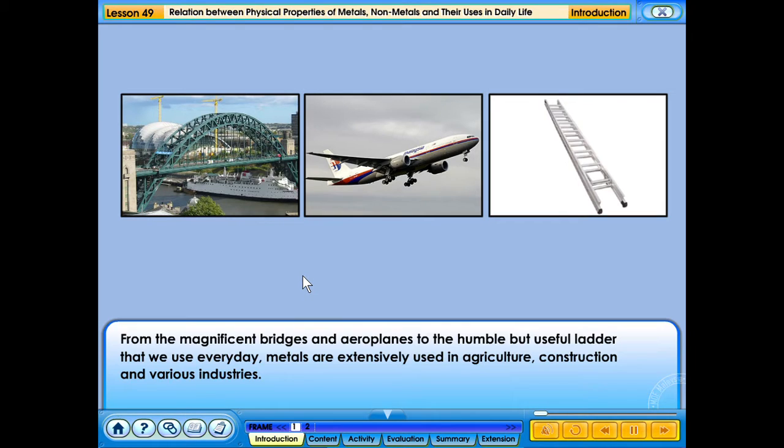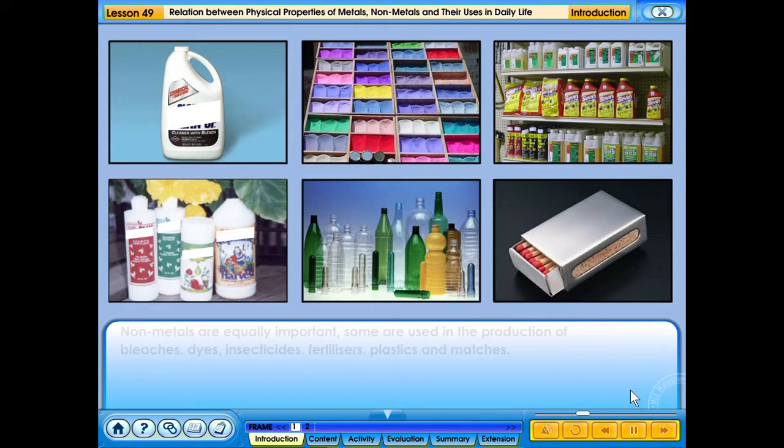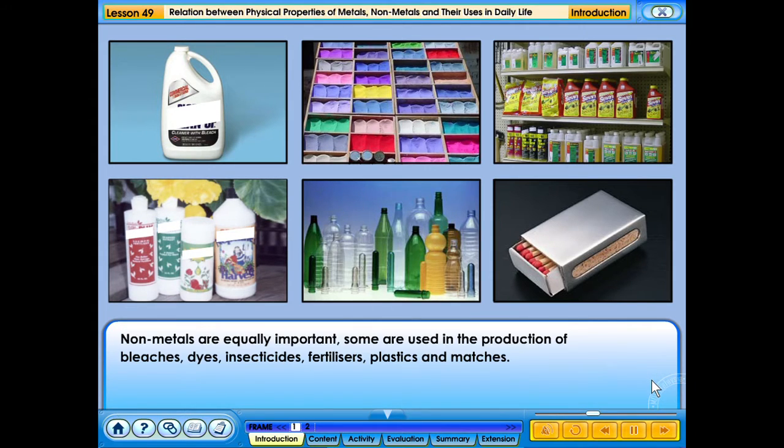From the magnificent bridges and airplanes to the humble but useful ladder that we use every day, metals are extensively used in agriculture, construction and various industries. Non-metals are equally important. Some are used in the production of bleaches, dyes, insecticides, fertilizers, plastics and matches.